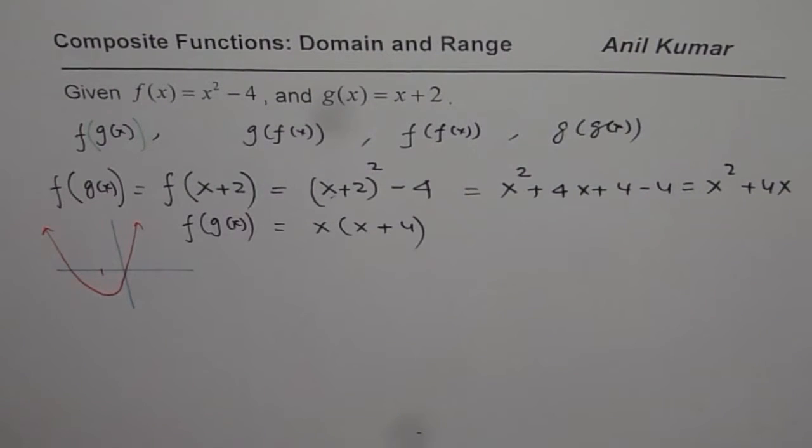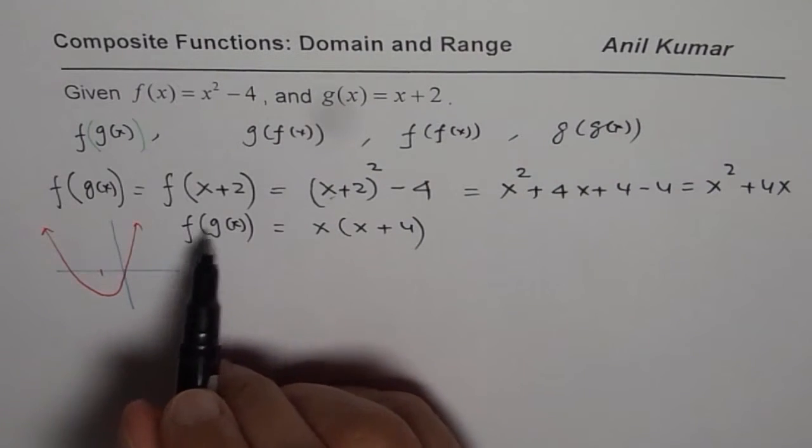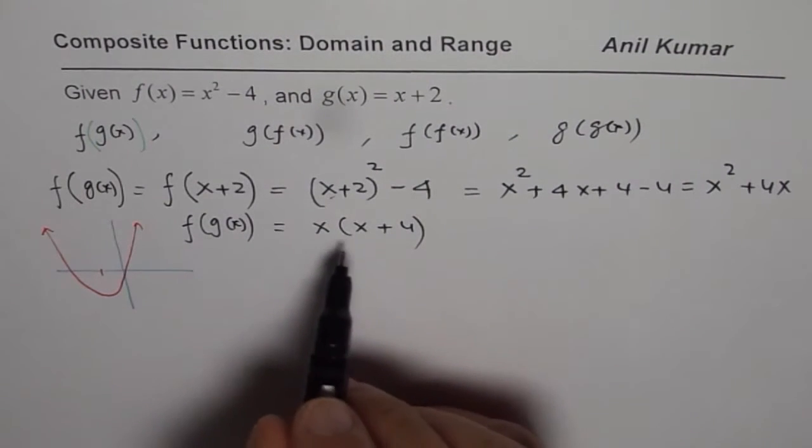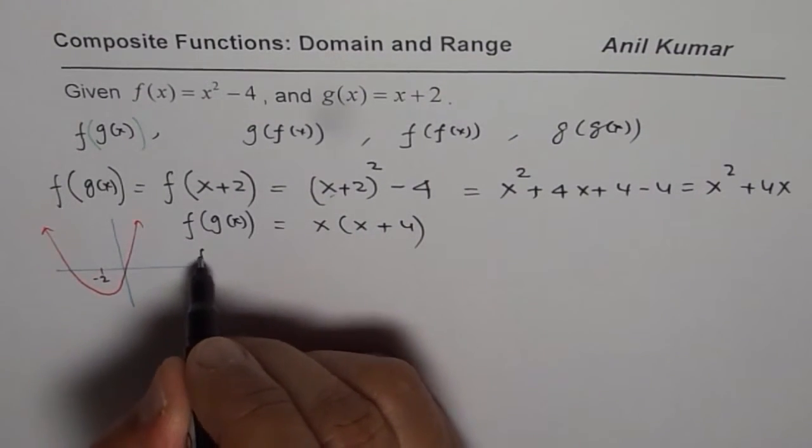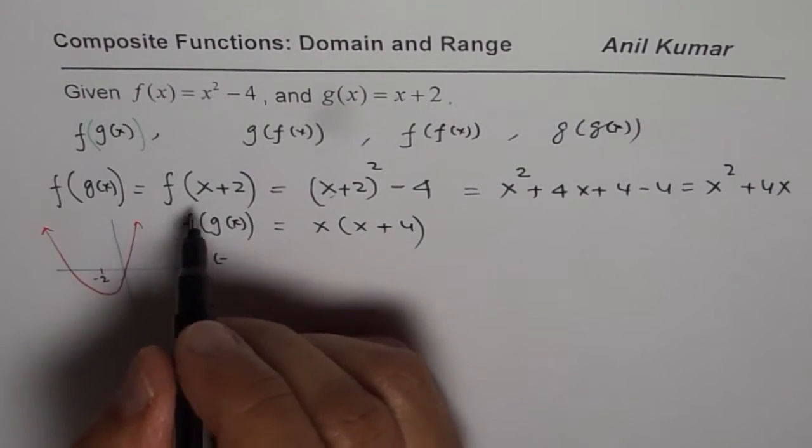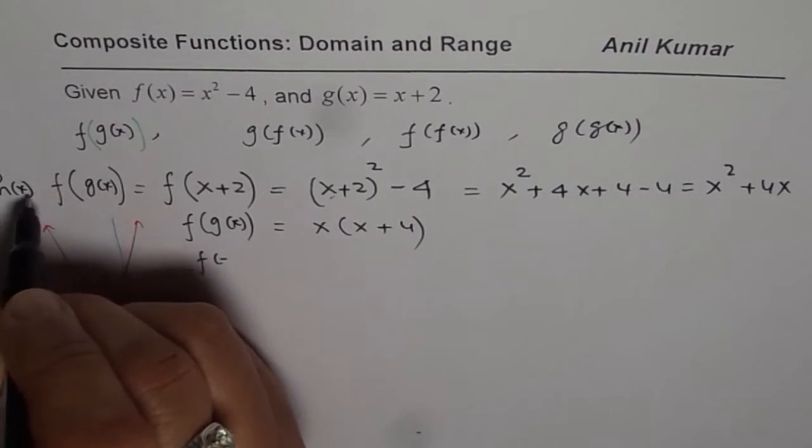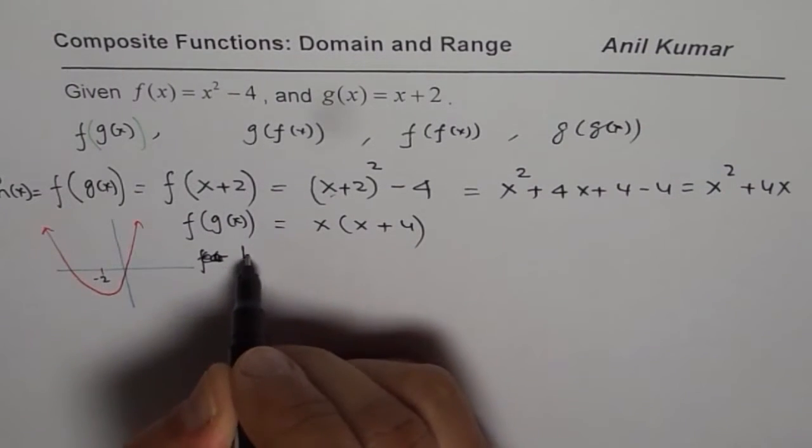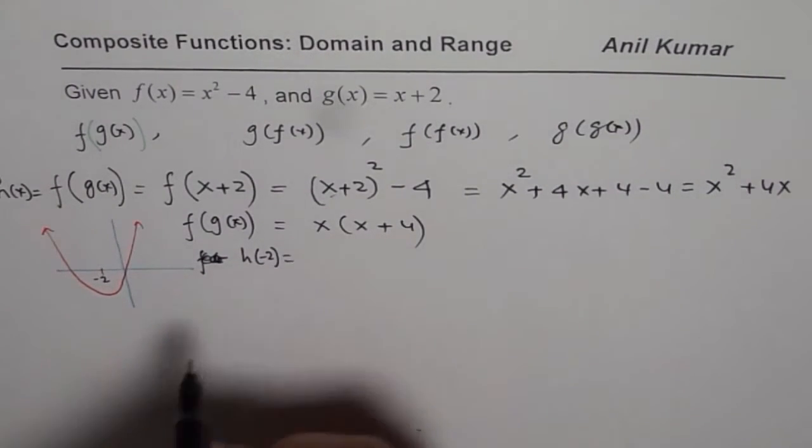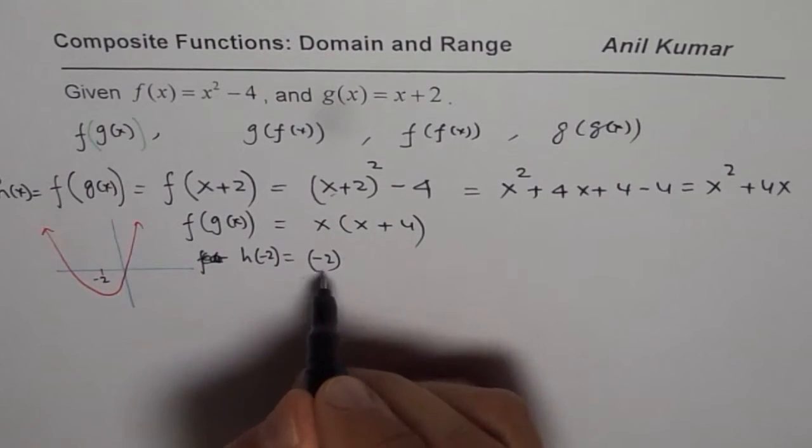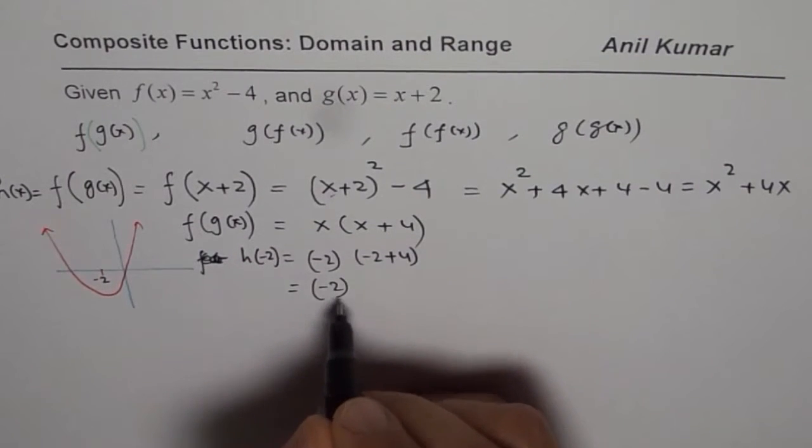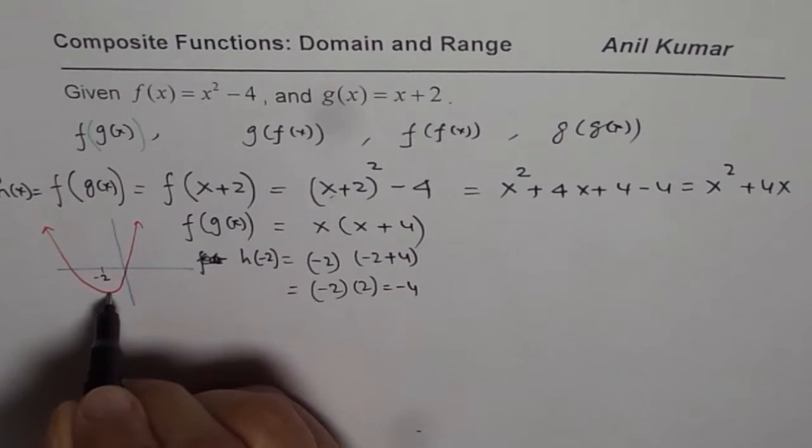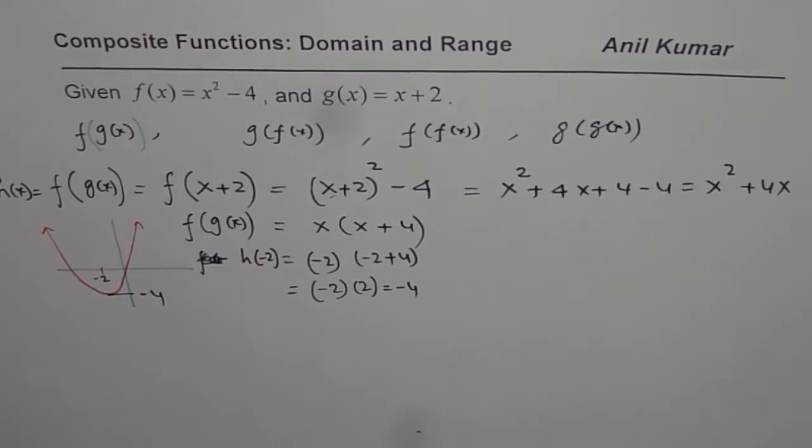Therefore let us find the value of function at minus 2. So when I put x as minus 2 here, at minus 2 what do I get. Let me call this composite function as h of x. So we will find the value of h of minus 2. So that is I will write minus 2 for x. Minus 2 times minus 2 plus 4. That is indeed equals to minus 2 times plus 2 which is minus 4. So this value is minus 4 for us.